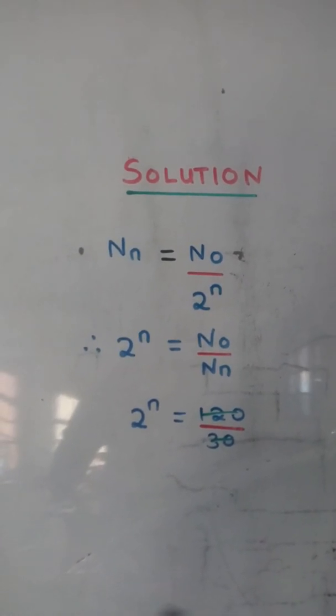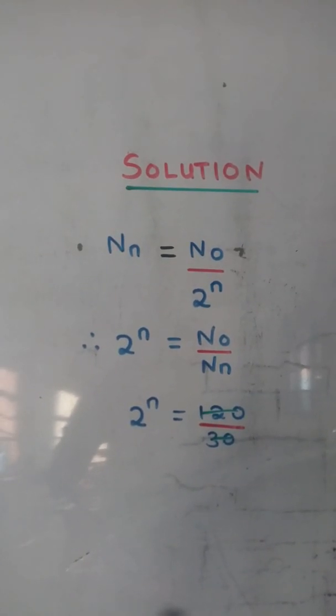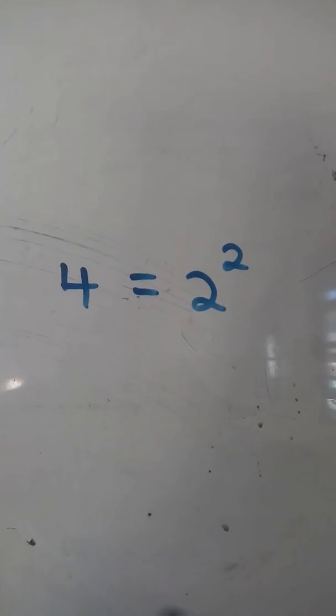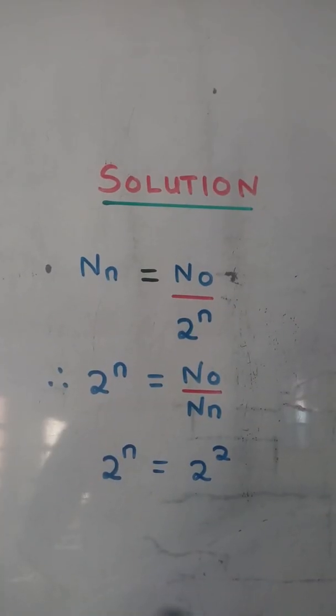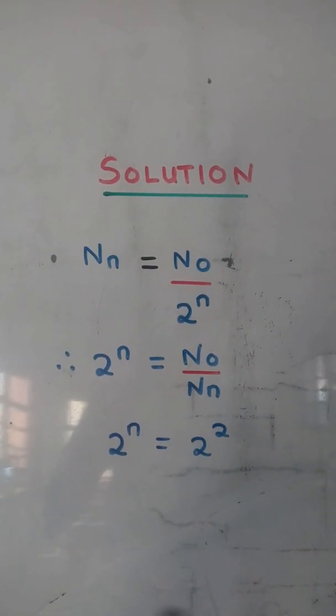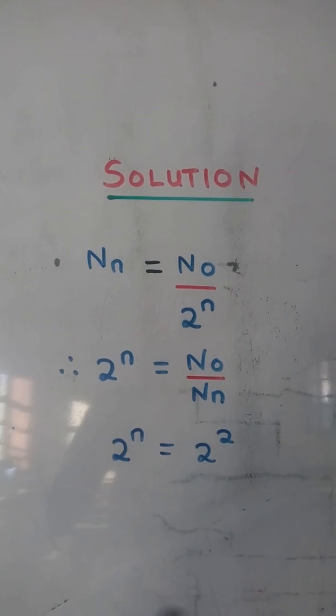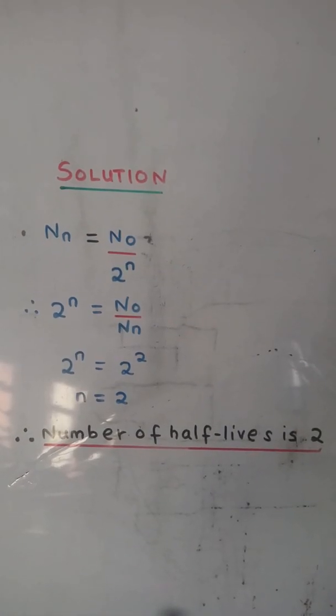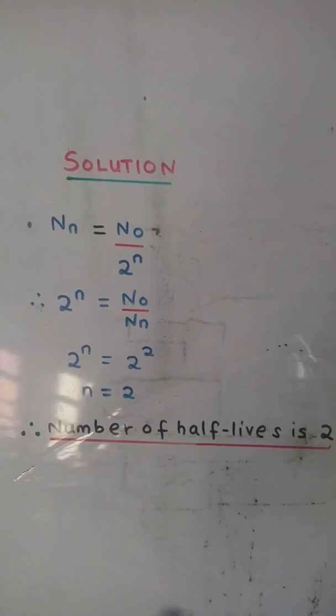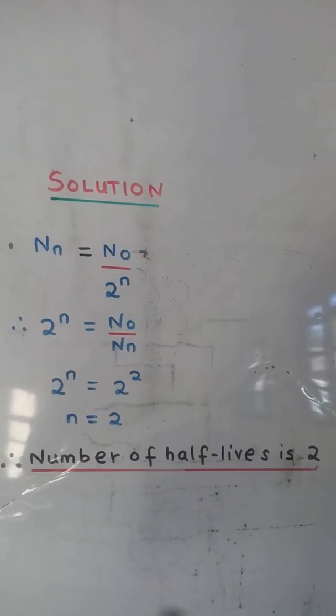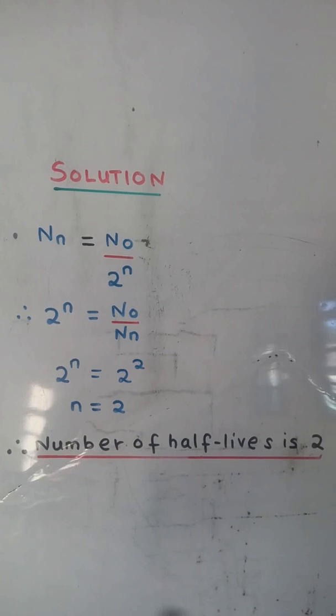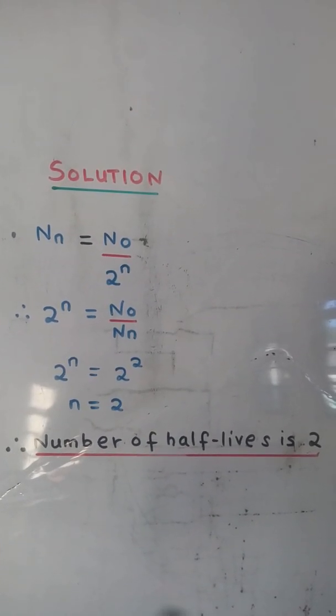120 divided by 30 is equal to 4. 4 is equal to 2 squared. By comparison, number of half-lives n is equal to 2. Therefore, the number of half-lives is 2.